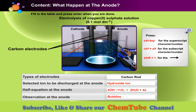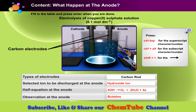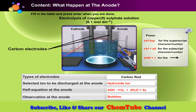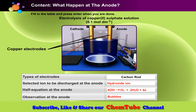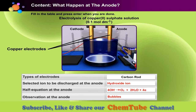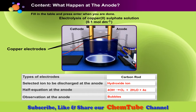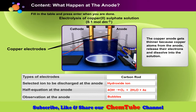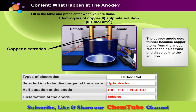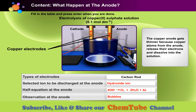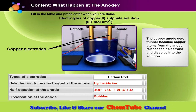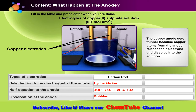Let's observe what happened at this copper anode. There are no bubbles of colourless gas. Instead, the anode is getting thinner. Here, copper atoms from the anode release their electrons to the external circuit and copper ions are produced.